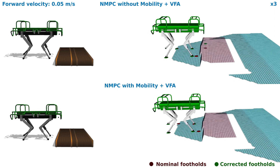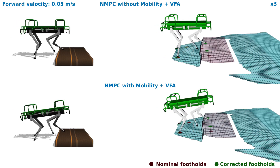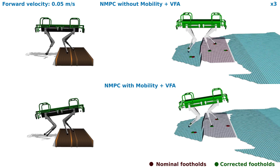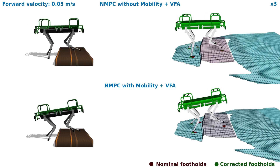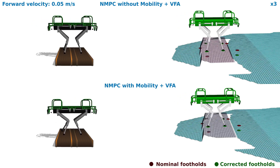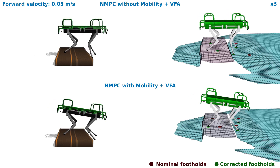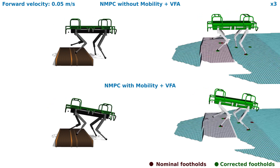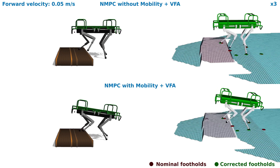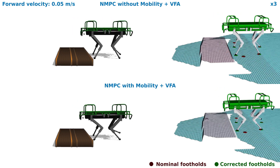First, we run the NMPC with and without mobility to traverse a pallet. The NMPC without mobility maintains a constant horizontal orientation of the robot's base, hence reaching the kinematic limits in some legs. On the other hand, when the mobility is turned on, the robot pitches while climbing up and down from the pallet to maximize the leg mobility and stay away from the kinematic limits.